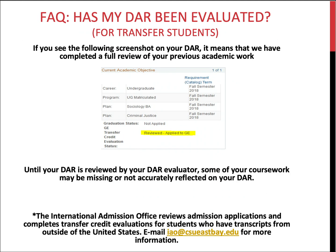A common question from transfer students is: has my DAR been evaluated? At the top of the DAR there is a line called transfer credit evaluation status. If it says 'reviewed applied to GE,' we have completed a review of your previous academic work, and you'll receive an email to your Horizon email account once this is done. If it says 'not yet reviewed,' some coursework may be missing or not accurately reflected. Note that the International Admissions Office reviews applications and completes transfer credit evaluations for students with transcripts from outside the United States.